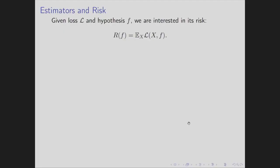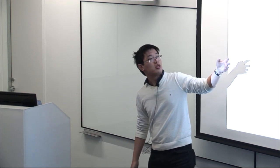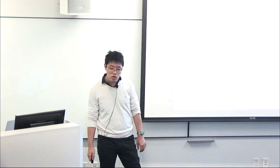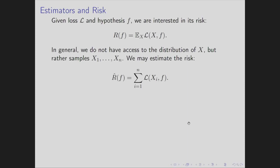Probably everyone in this room knows what cross-validation is, but let me set the scene. We have some loss that we care about. For a fixed hypothesis F describing how the data behaves, we are interested in the risk, which is the expectation over the data-generating distribution of the loss of a hypothesis. In most cases we don't have access to this directly, so instead we have n samples and we compute the empirical risk, replacing the expectation by the empirical average.